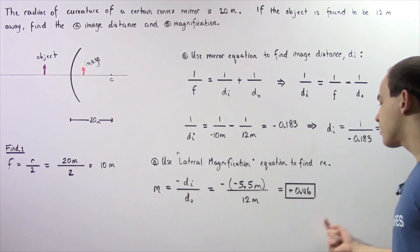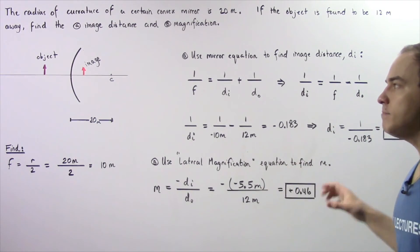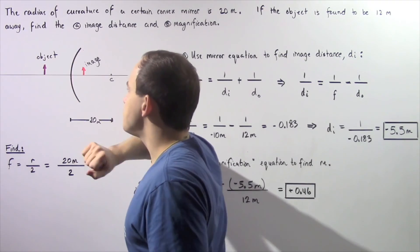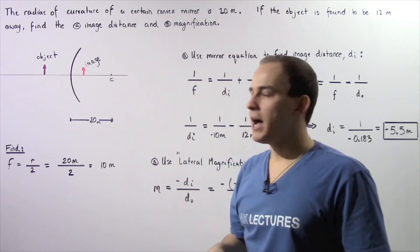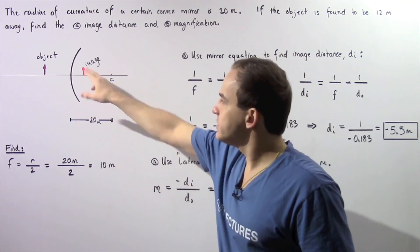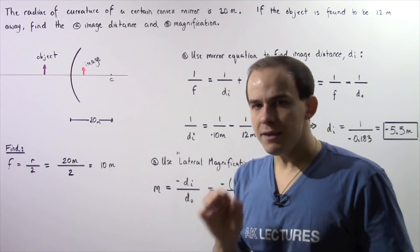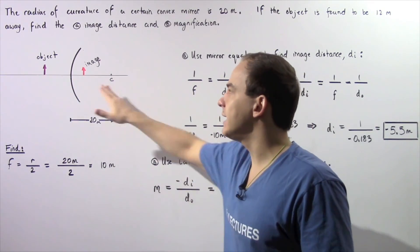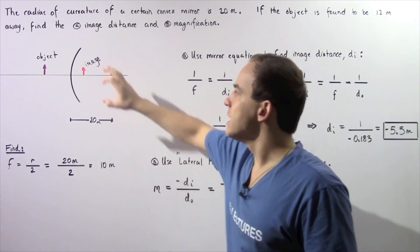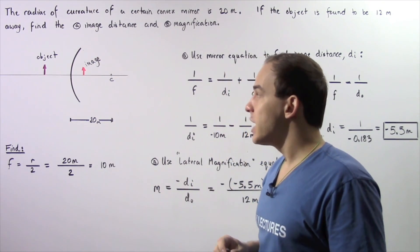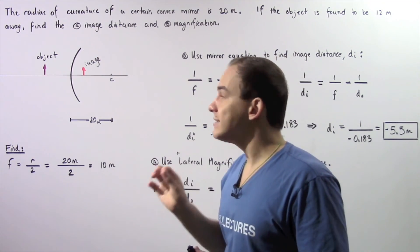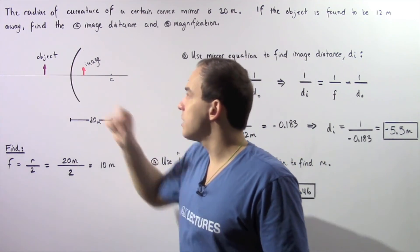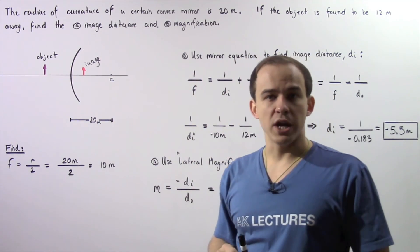The fact that the magnification is smaller than 1 means the image height will be smaller than the object height. We are dealing with a virtual image because the image is found behind our convex mirror. The virtual image is right-side up and smaller than the actual object.